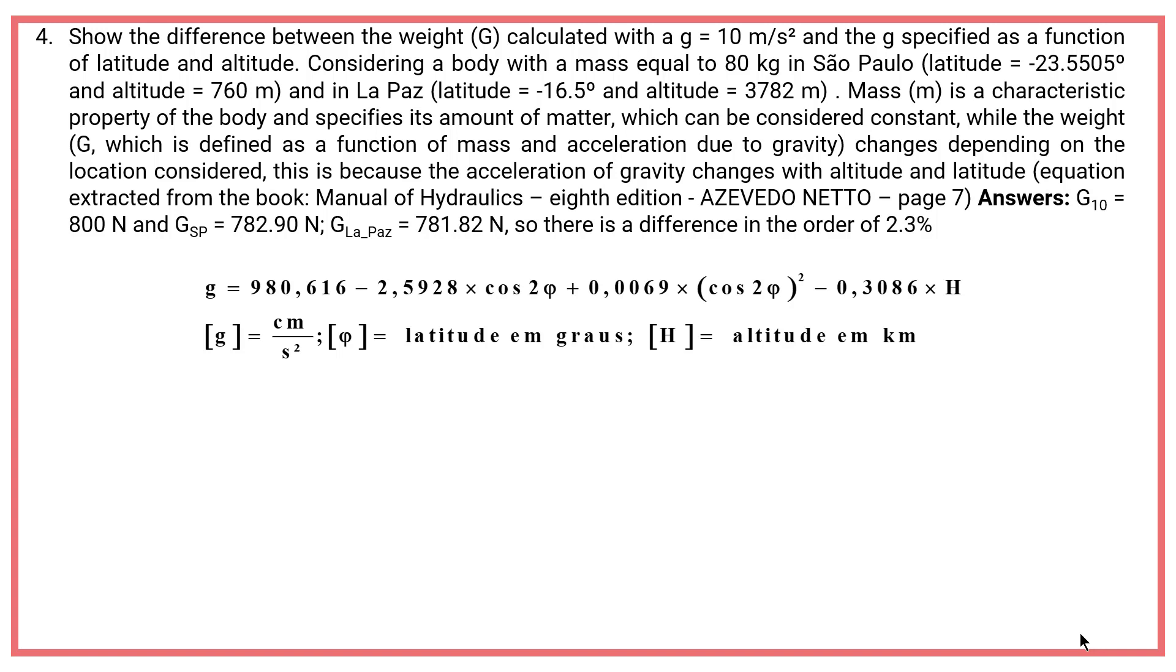Fourth: Considering a body with a mass equal to 80 kilograms in Sao Paulo, latitude equals minus 23.5505 degrees and altitude equals 760 meters, and in La Paz, latitude equals minus 16.5 degrees and altitude equals 3782 meters.